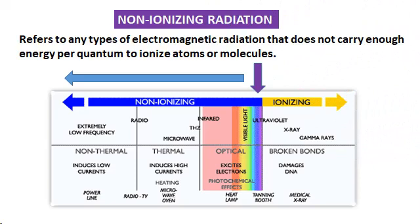Most ultraviolet is classified as non-ionizing radiation. Non-ionizing radiation refers to any type of electromagnetic radiation that does not carry enough energy per quantum to ionize atoms or molecules — that is, to completely remove the electron from an atom or molecule.